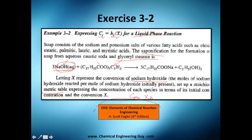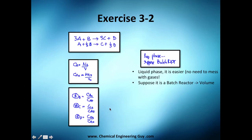You can find this problem or exercise in this book, chapter number three. Let's do it. First thing first, we've got this reaction: three moles of A plus one mole of B gives three moles of C and one mole of D.